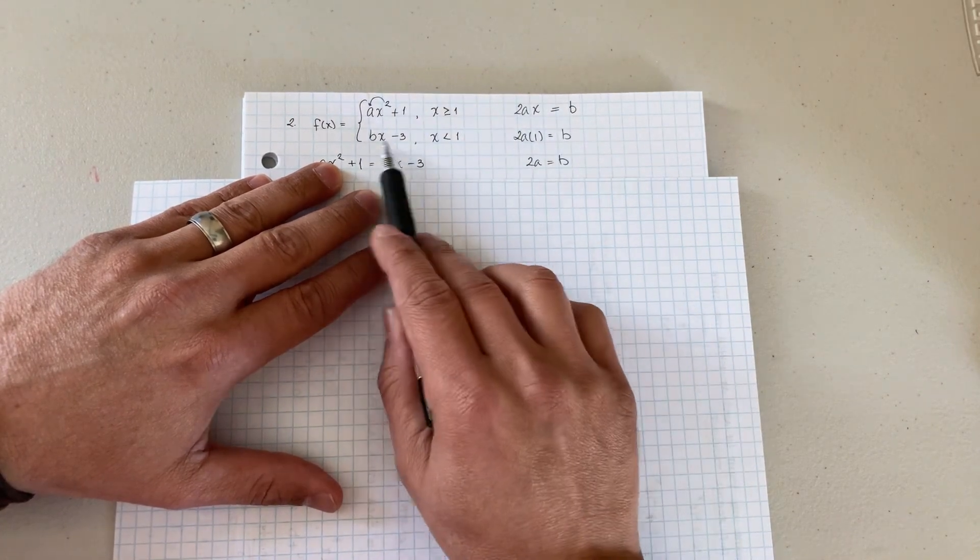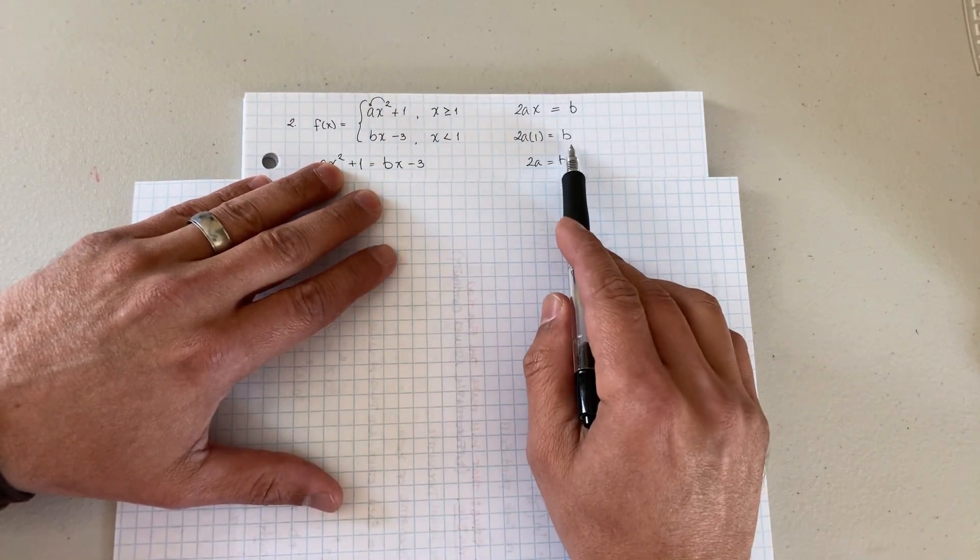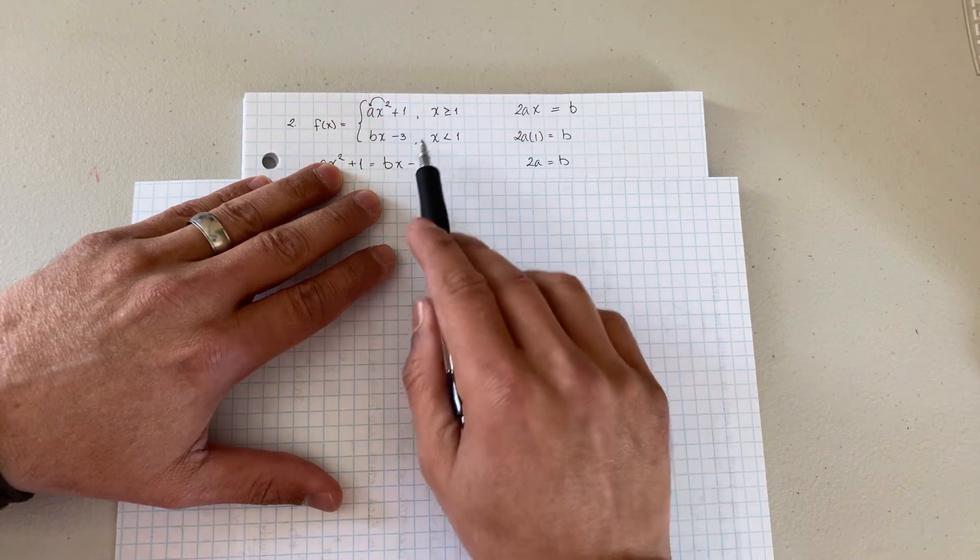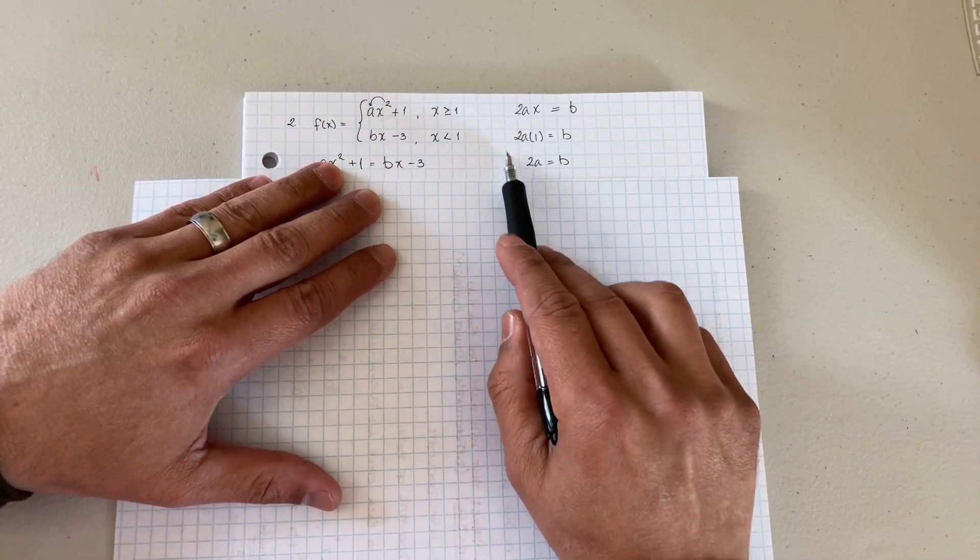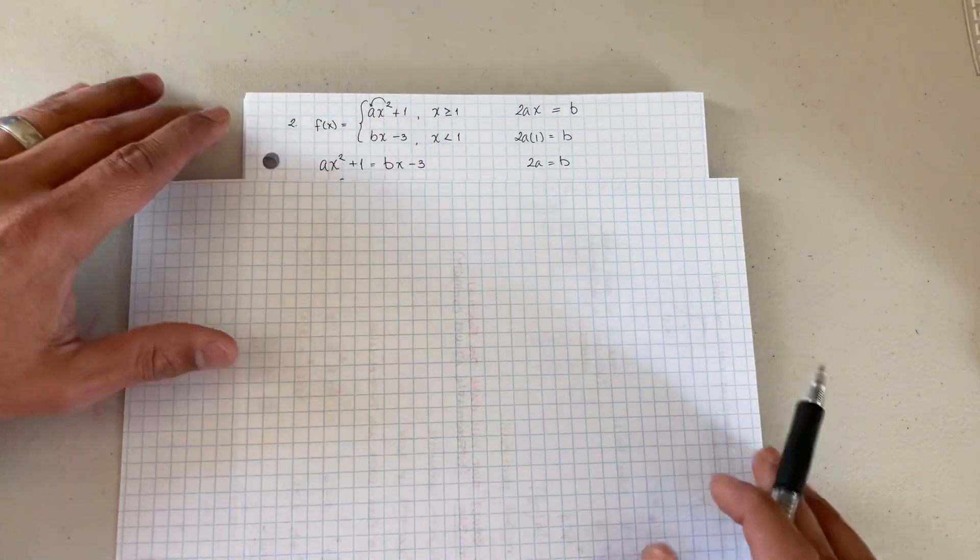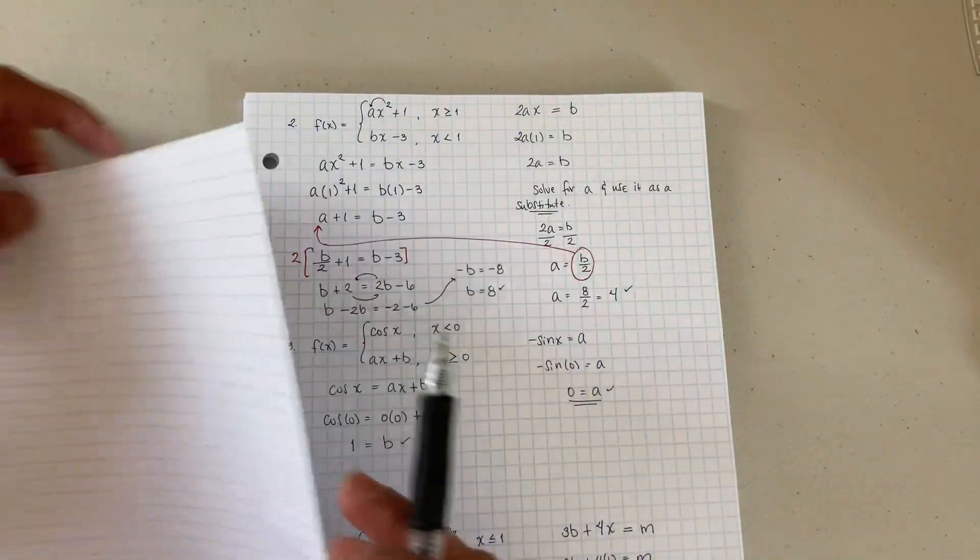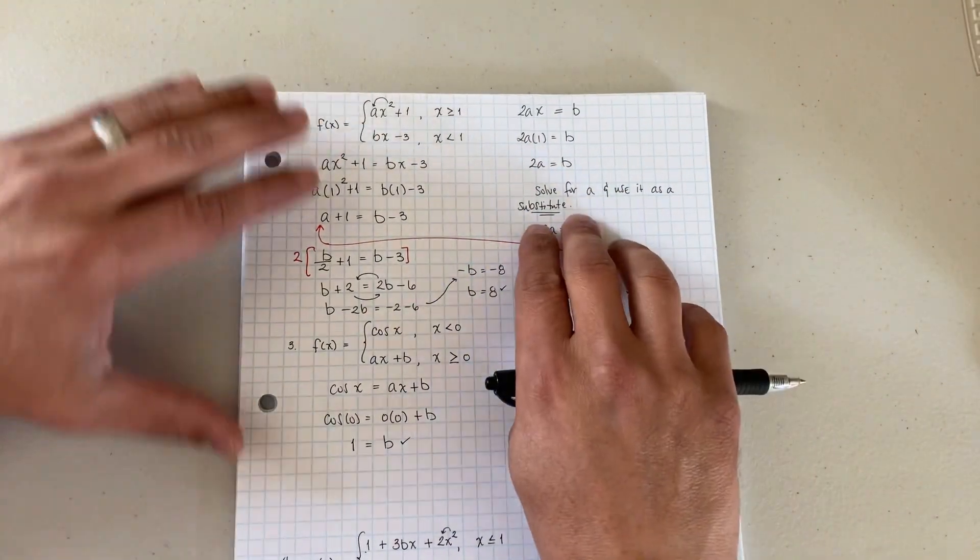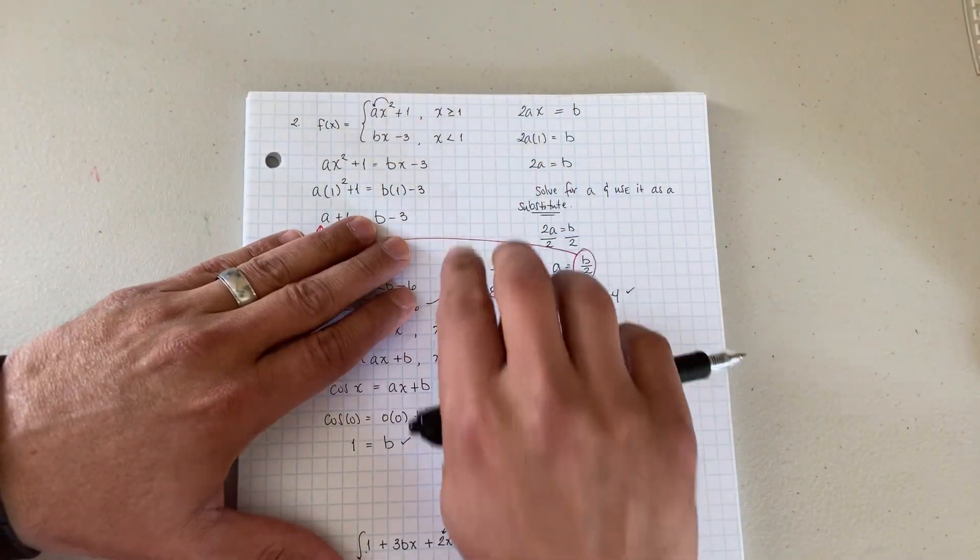It becomes 2ax equals b, nice simple equation. Now what do we do? Well we plug in our 1. 2a is equal to b. Well you can't solve this right? So now you can go ahead and leave it like that if you want. For right now we go back to continuity.